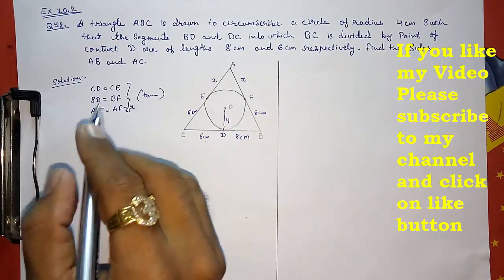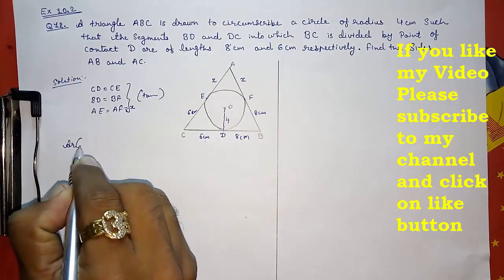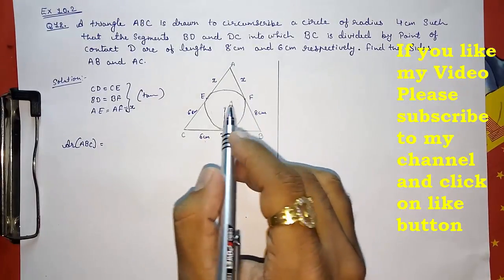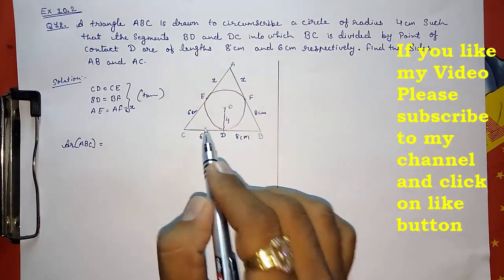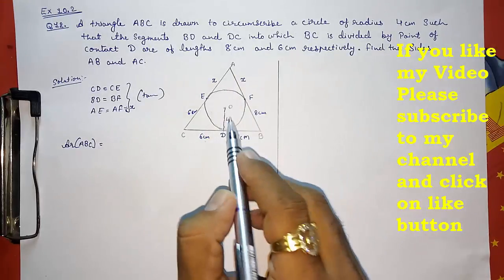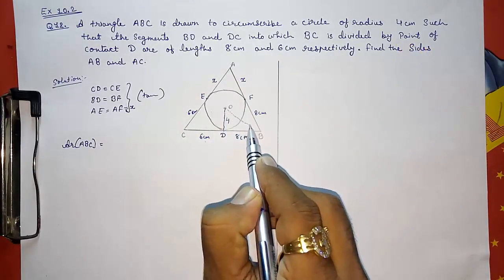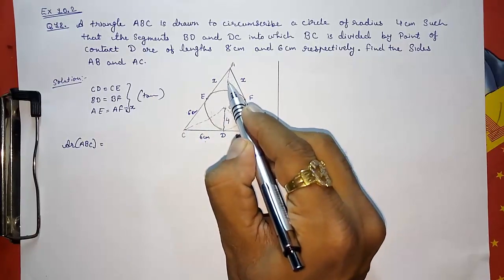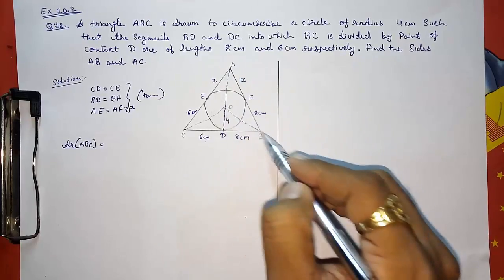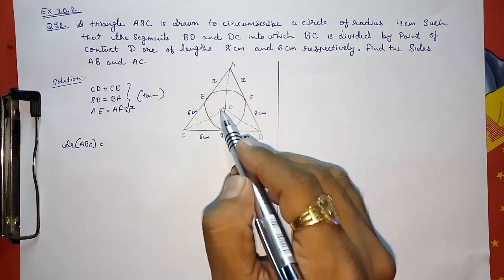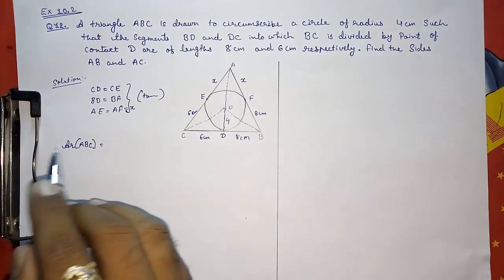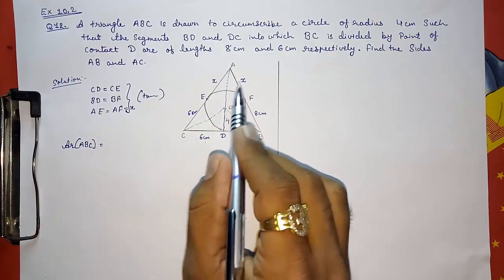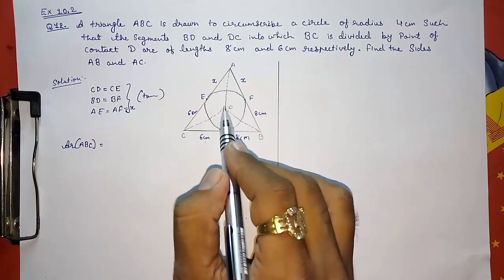Now I am going to find the area of this triangle. Area of triangle ABC equals to—directly we don't have the height of this main triangle. So what we are going to do: I am going to divide this bigger triangle into smaller three triangles. You can see, by joining this, now we are getting three triangles: AOB, BOC, and AOC. So area of ABC equals to—I divided into three parts. You can see: AOB, BOC, and AOC.